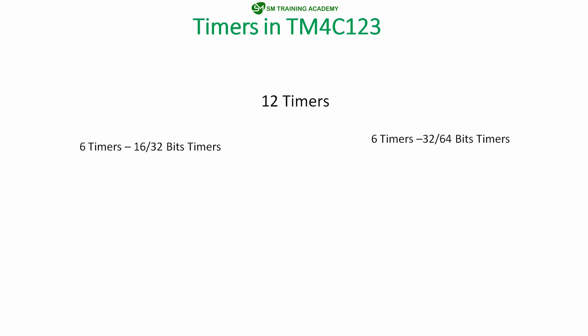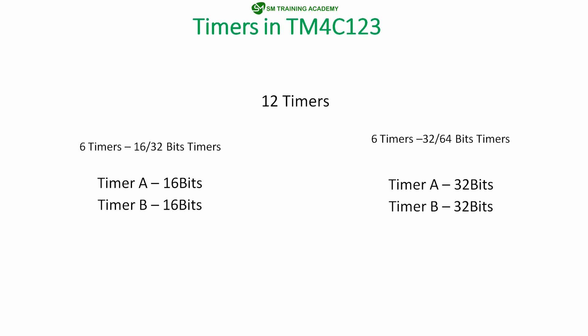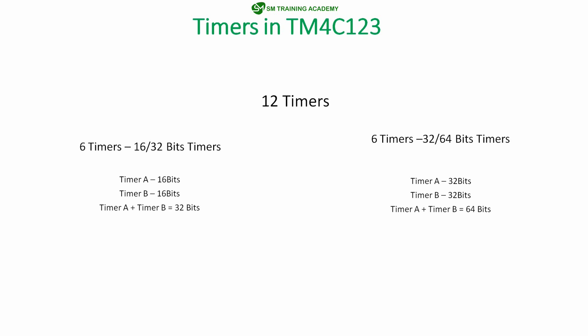The 16/32-bit timers are subdivided into Timer A and Timer B, each being a 16-bit timer. The 32/64-bit timers on the right also have Timer A and Timer B, which are each 32-bit timers. Together, Timer A and Timer B can be configured as a 32-bit timer on the left or a 64-bit timer on the right. These 64-bit timers are also called wide timers in this microcontroller.